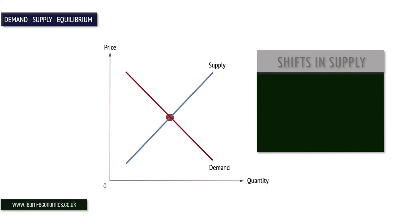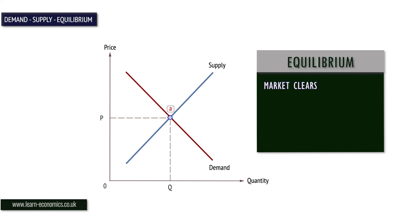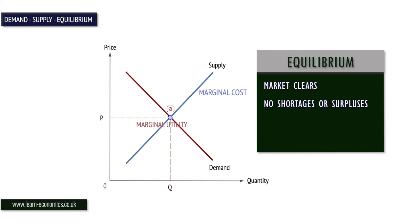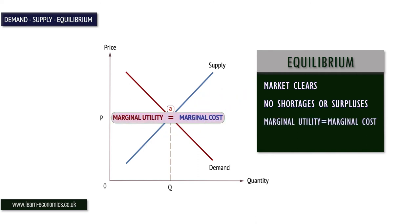Economic theory states that there will be a single price at which demand equals supply, called the equilibrium price. At equilibrium, the market clears. There are no shortages or surpluses. Marginal utility equals marginal cost. Economic welfare is maximised.